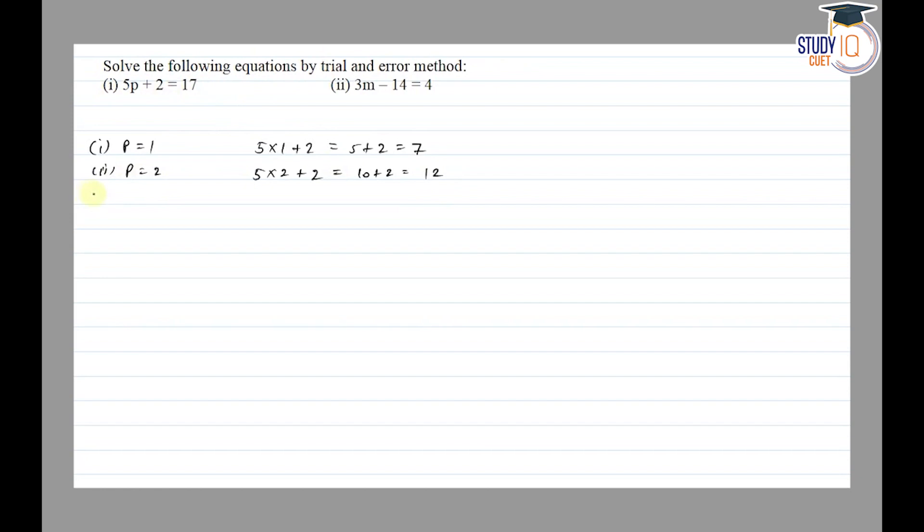Next we'll put p equals 3. So 5 into 3 plus 2 is equal to 15 plus 2 is equal to 17. So here,